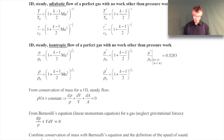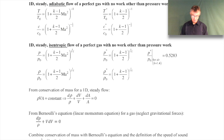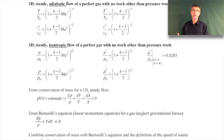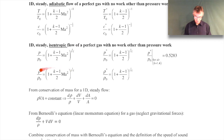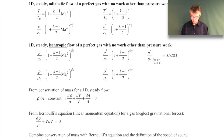The idea is: if this is the pressure at that Mach number, and you bring the flow to rest, this is the stagnation pressure you would get. You can define a stagnation pressure by just imagining the flow is brought to rest isentropically. Same with density - this is the density at that Mach number; bring the flow to rest and you get the stagnation density. The sonic pressure and density are the conditions when Mach number equals 1.